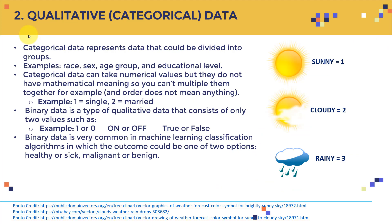The next type is qualitative or categorical data. For example, one indicates sunny, two indicates cloudy, and three indicates rainy. You have tons of examples such as race, sex, and age group. As mentioned, you cannot simply multiply them — for instance, one might mean single and two might mean married, but you cannot add them together and come up with something in between. That's the important feature of categorical data.